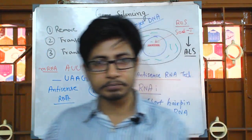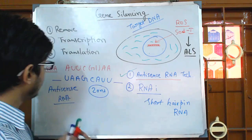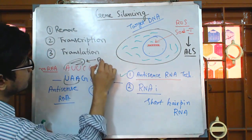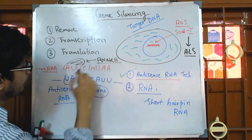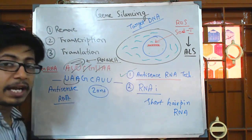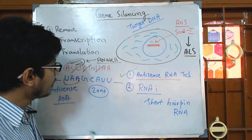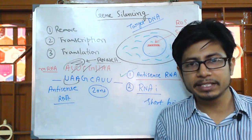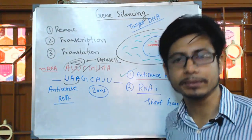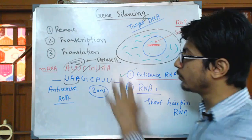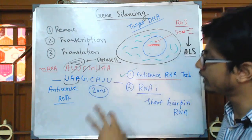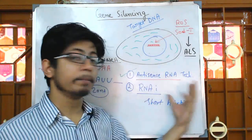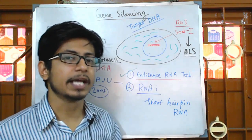Once the antisense RNA binds the mRNA, it recruits the help of RNase H, an enzyme in our body. RNase H can selectively break down the mRNA sequence that is present there. So we can get rid of all the mRNAs, and if there are no mRNAs, there is no way the protein will be produced. This is antisense RNA mediated gene silencing.